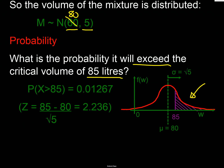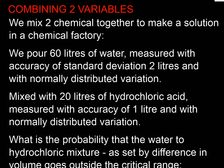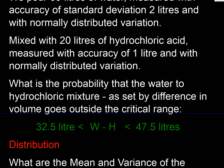Our question was: what's the probability that the mixture exceeds the critical volume of 85 liters? Looking at the diagram, we want the upper tail beyond 85 liters. The z-value is (85 − 80) / √5 = 2.236 standard deviations from the mean. Using a calculator, the probability is 0.0127 — that's how we use expectation algebra for a sum.